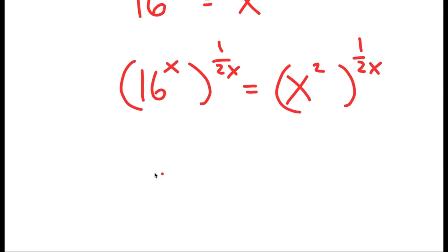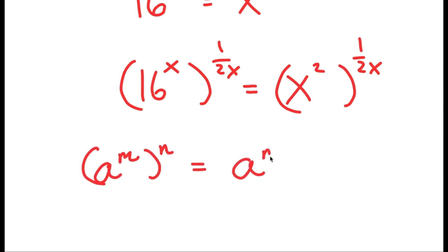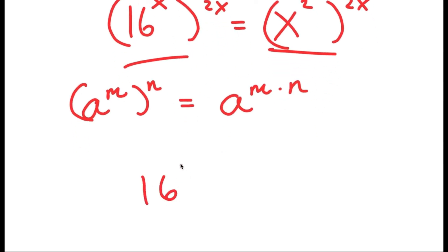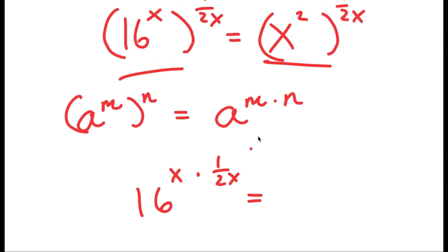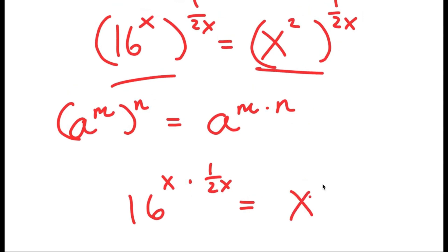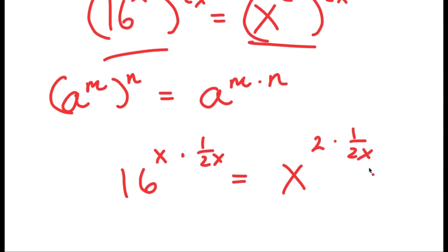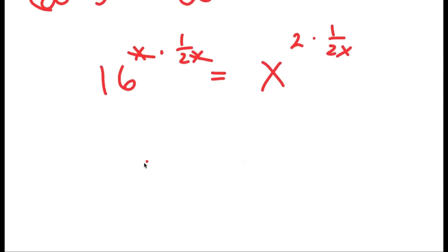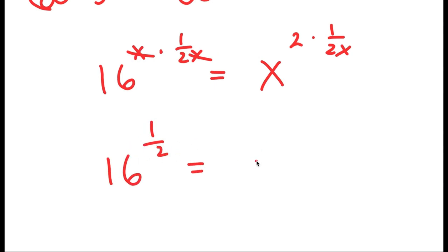Using the property that a to the power of m to the power of n equals a to the power of m times n, I apply this to both terms. On the left, 16 to the power of x times 1 over 2x — the x's cancel — leaving 16 to the power of 1 half. On the right, x to the power of 2 times 1 over 2x — the 2's cancel — leaving x to the power of 1 over x.